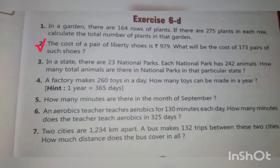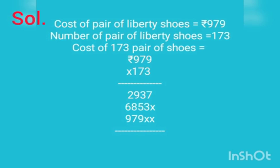Next question. The cost of a pair of Liberty shoes is Rs. 979. What will be the cost of 173 pairs of such shoes? Solution. Cost of a pair of Liberty shoes is equal to Rs. 979. Number of pairs of Liberty shoes is equal to 173. Cost of 173 pairs of shoes is equal to Rs. 979 multiplied by 173.